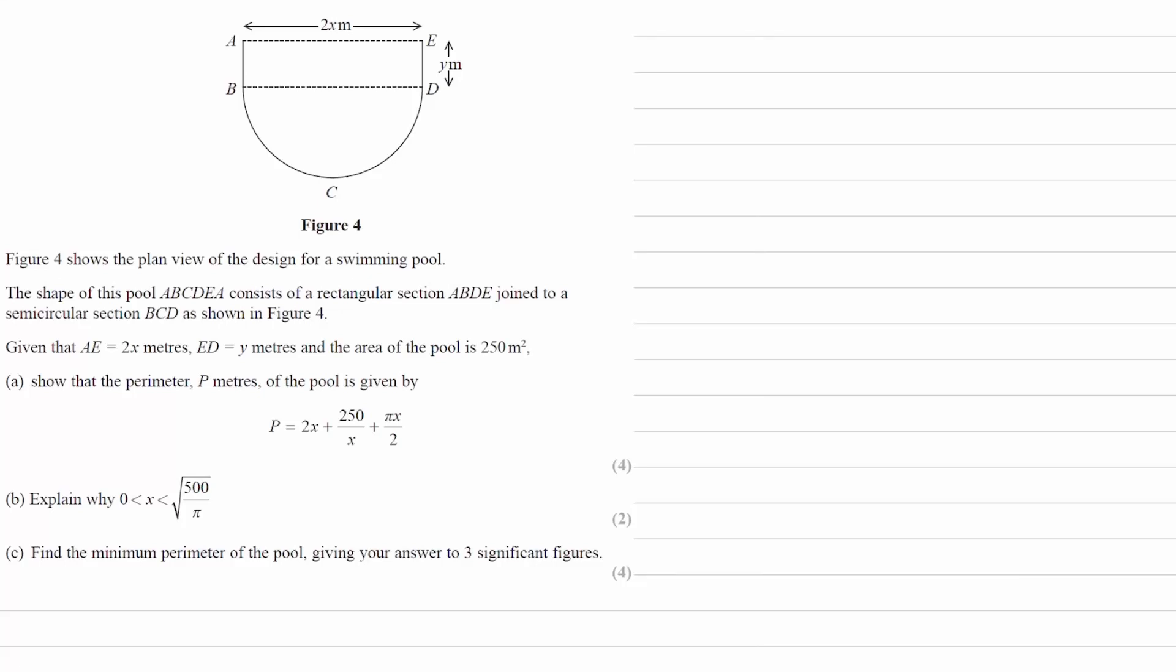This is a hard differentiation modeling question. We have a plan view of a pool. This is it here. We have a rectangle attached to a semicircle, and we're given some dimensions.